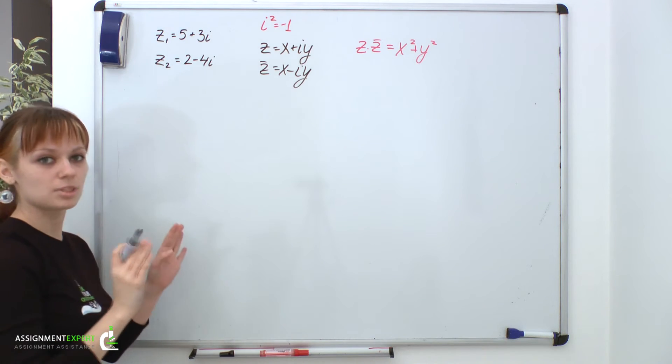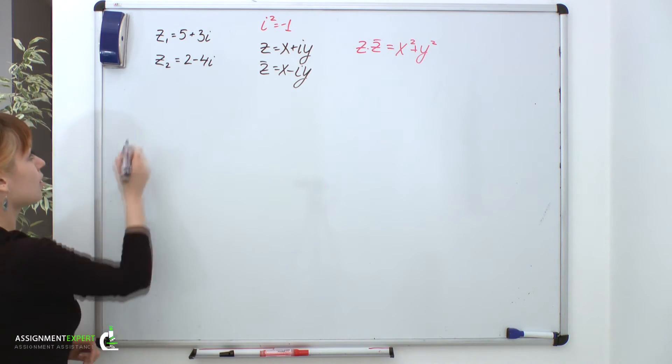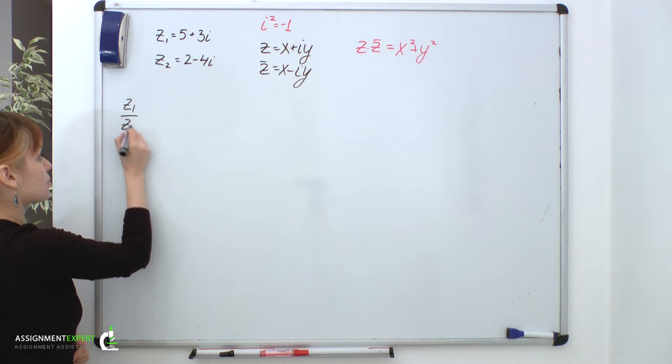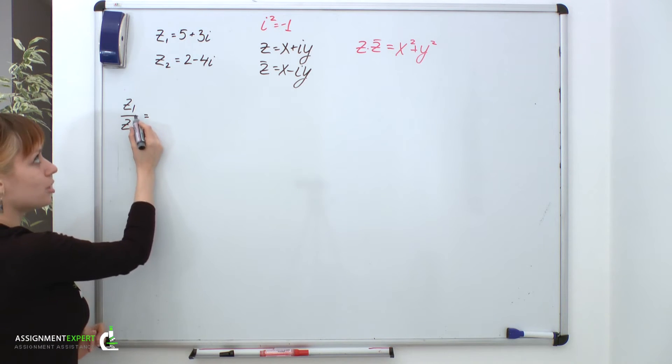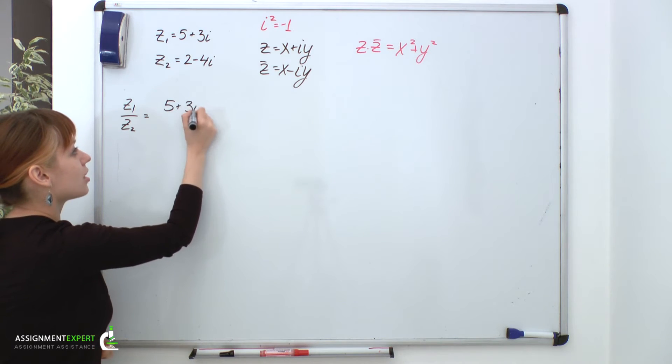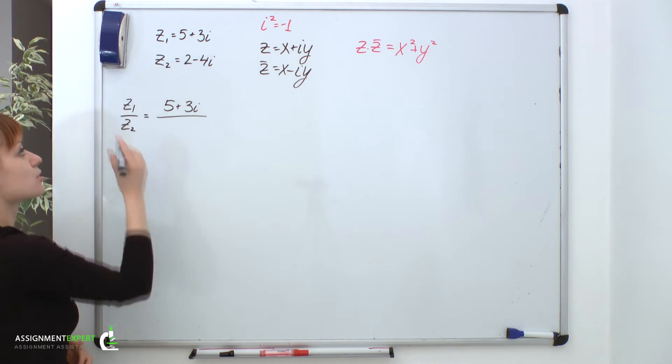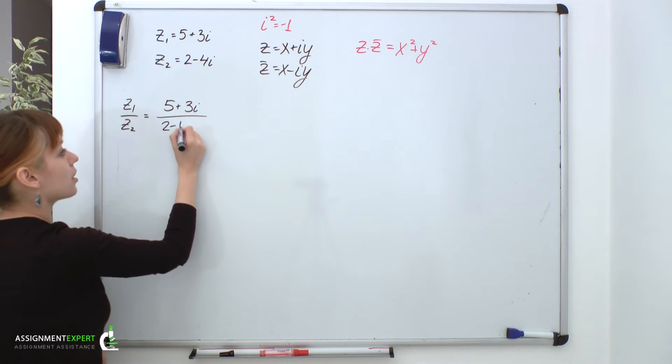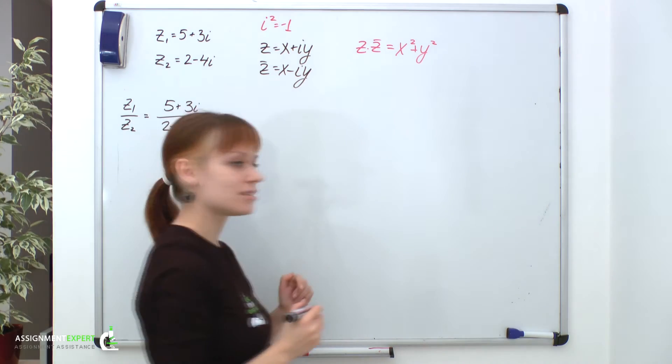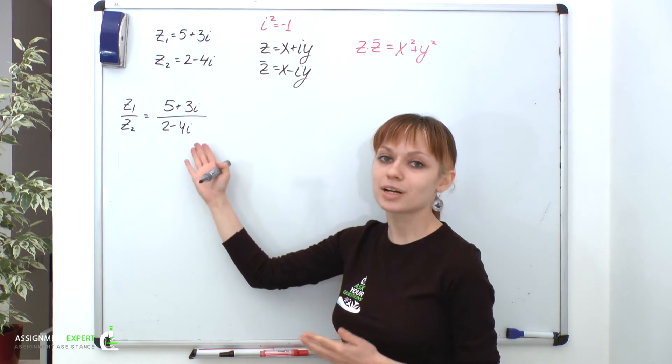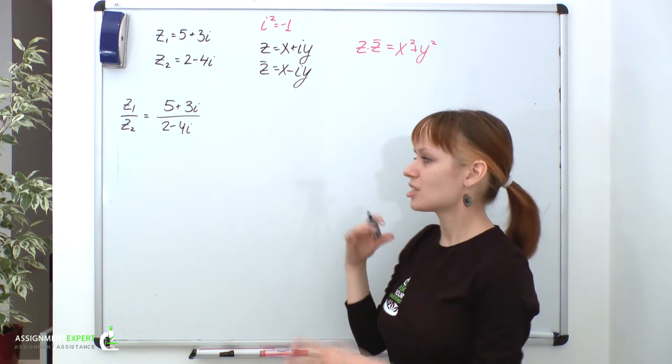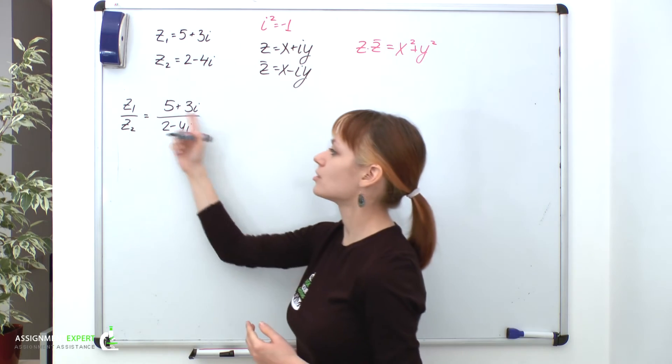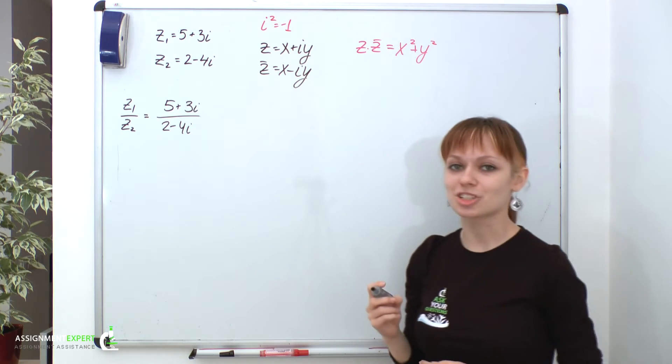So, same old two complex numbers, z1 and z2. We want to divide z1 by z2. So, we have this expression in the form of a fraction. Its numerator will be equal to z1, 5 plus 3i. And its denominator equals z2, 2 minus 4i. But that is not yet the answer, since we cannot tell where is its real part and where is its imaginary part. And in order to be able to do so, we should somehow obtain a real number in denominator.